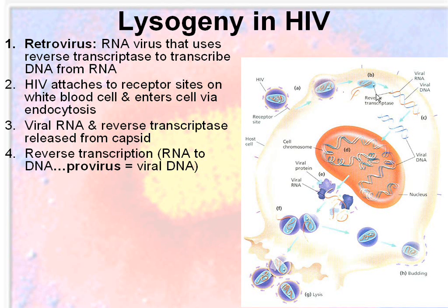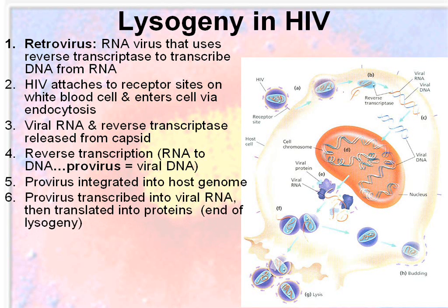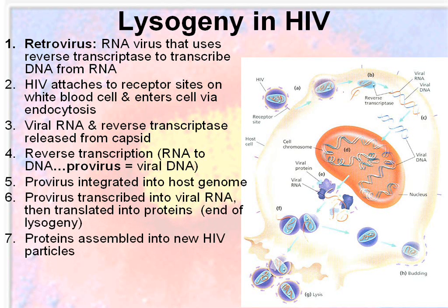Then you have reverse transcription — reverse transcriptase makes viral DNA, producing a double-stranded section of viral DNA. This is your provirus: RNA to DNA. This provirus is inserted into the host genome, just like we saw in the lysogenic cycle. The provirus is then transcribed into viral RNA and translated into proteins — this is the end of lysogeny. The proteins are assembled into new HIV particles, and the new viruses leave the cell via lysis or budding, and then they spread.